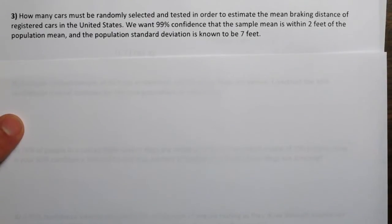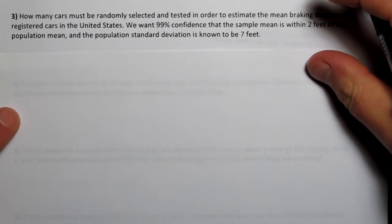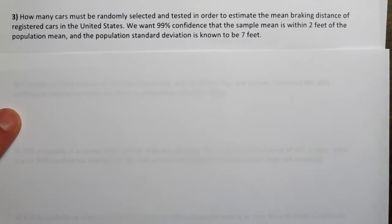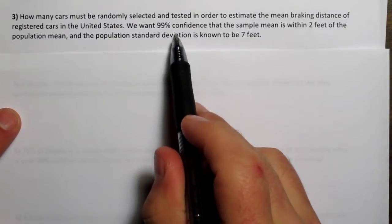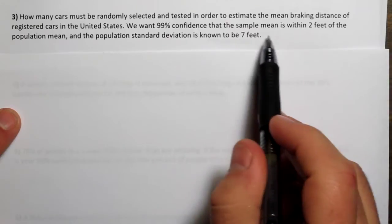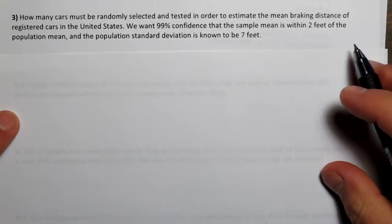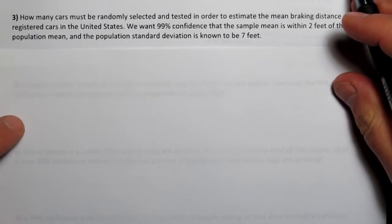On problem 3, we're still assuming all the conditions have been met. How many cars must be randomly selected and tested in order to estimate the mean braking distance of registered cars in the United States? We want 99% confidence that the sample mean is within 2 feet of the population mean, and the population standard deviation is known to be 7 feet.